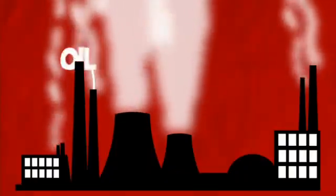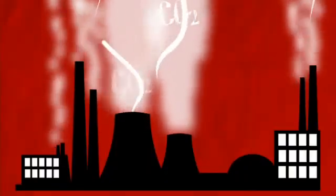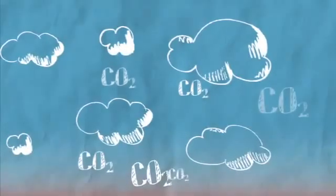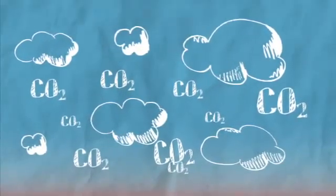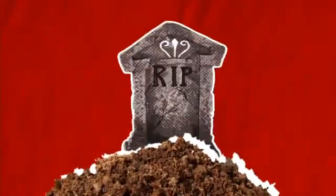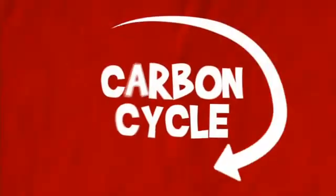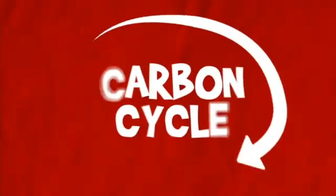Burning wood and fossil fuels also puts carbon dioxide into the air. So now we're back where we started, with carbon in the atmosphere — it gets taken in by plants and off we go again. From air to plants, animals, microorganisms, soil, and dead stuff and back again. That is the carbon cycle. Busy, busy!